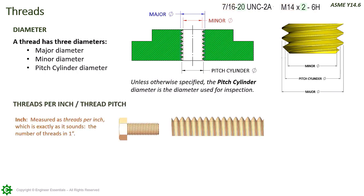Let's take a look at the threads per inch and thread pitch callouts for inch and metric threads. Inch threads are measured as threads per inch — exactly what it says: the number of threads that exist within a single inch. If we count the threads within this inch of thread, we see that there are 10 threads per inch.